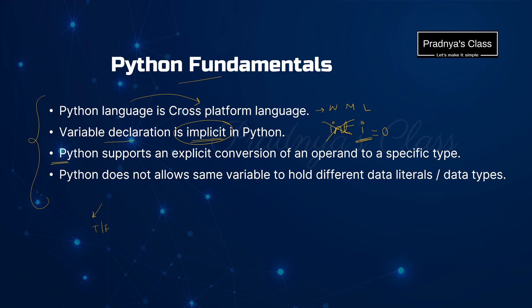The third concept: Python supports an explicit conversion of an operand to a specific type. Yes, there is an arrangement to change the data type of the operand to a specific type. Here we are converting string to integer.